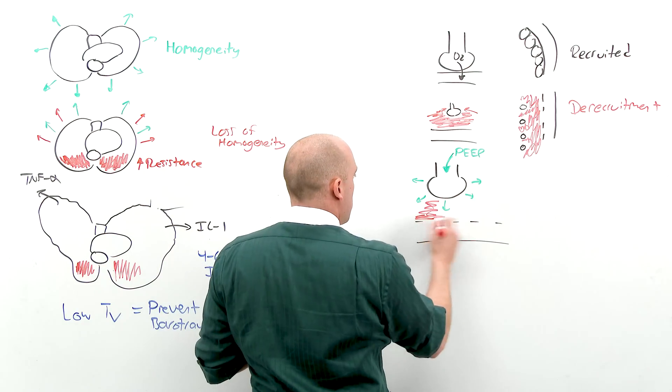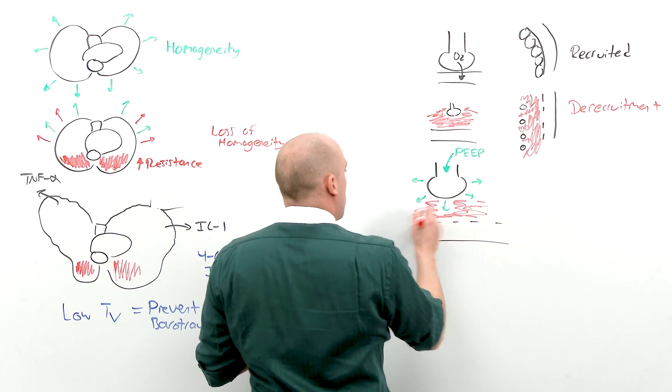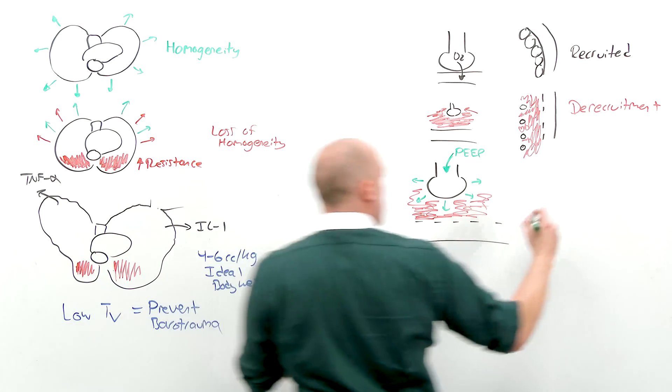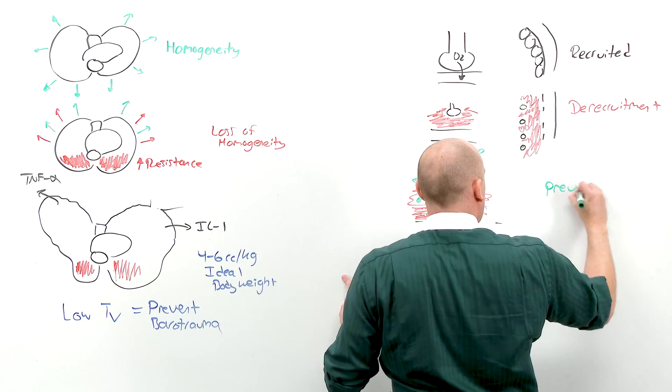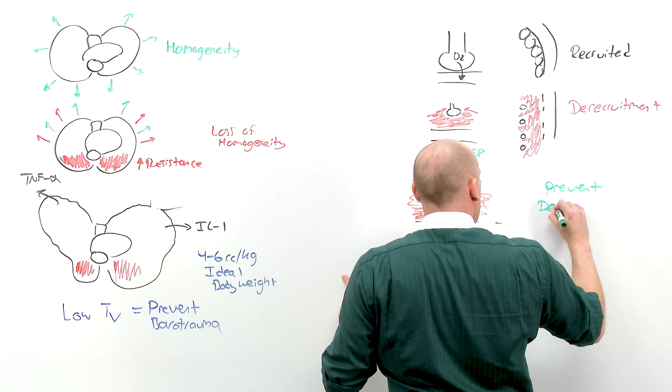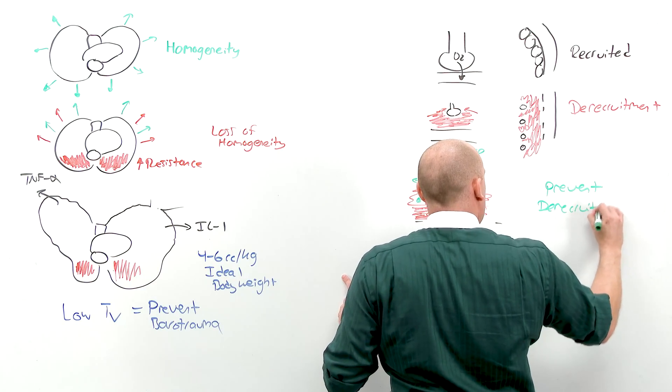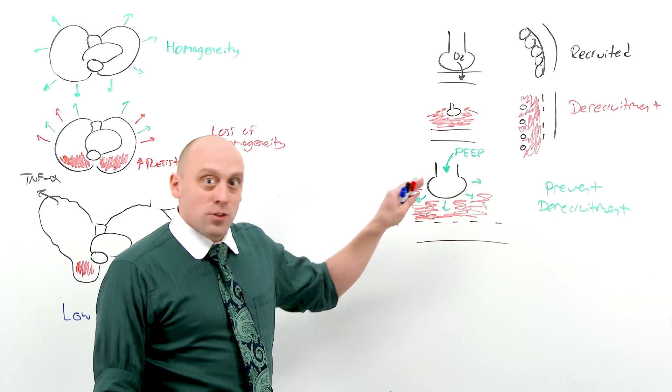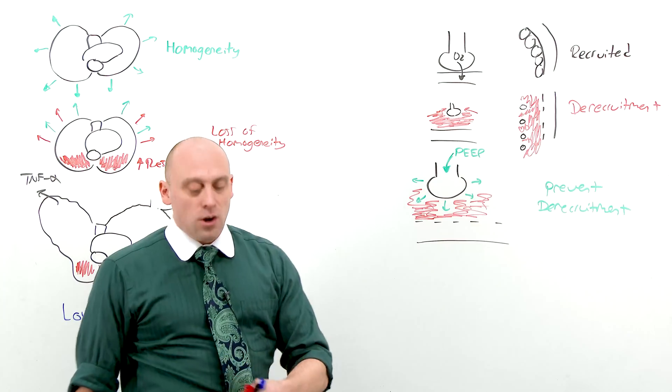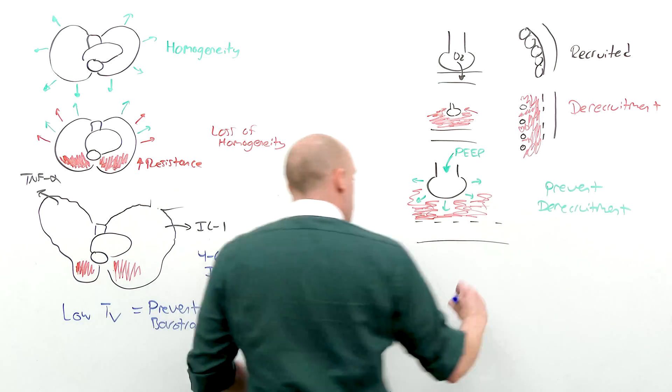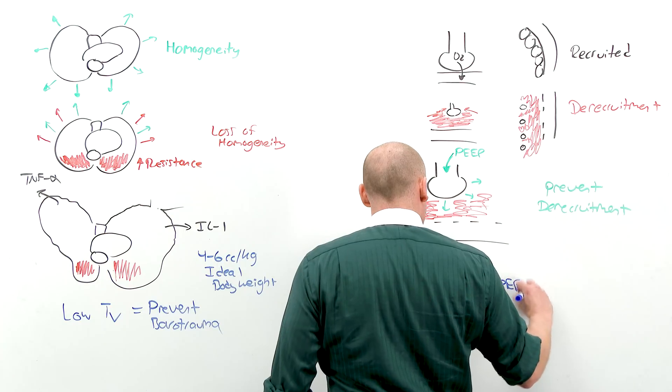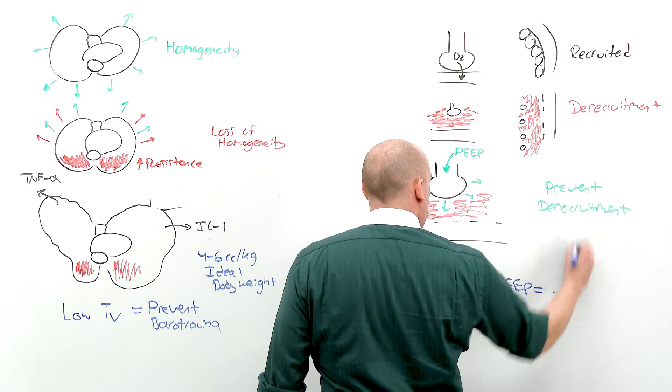So even though the capillaries are still leaky, and there may be an impaired diffusion barrier, the alveoli stay open. And this treatment is the prevention of derecruitment. Because once collapsed, you are not going to get them back open until whatever caused the ARDS is gone. So a high PEEP strategy prevents derecruitment.